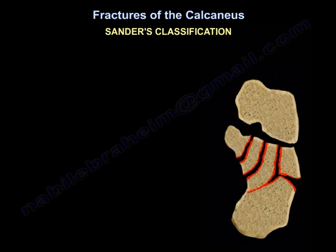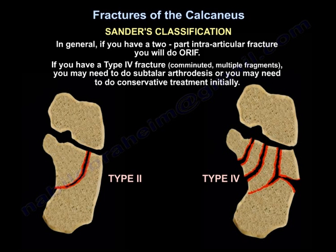Type 4 is the one where you may need to do primary arthrodesis if you cannot restore the articular surface. In general, if you have a two-part intraarticular fracture, you will do open reduction internal fixation. And if you have a type 4 fracture — comminuted, multiple fragments — you may need to do subtalar arthrodesis, or you may need to do conservative treatment initially.